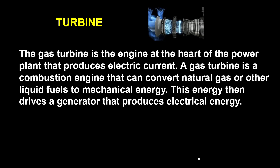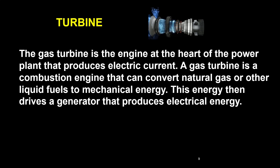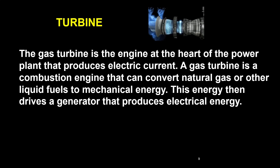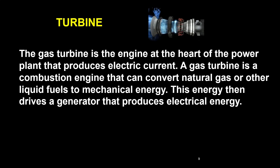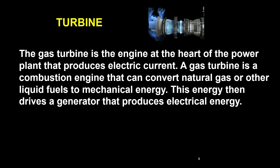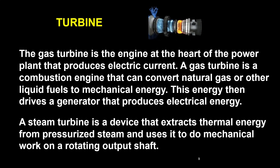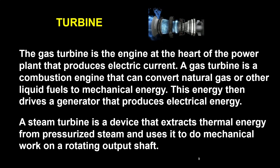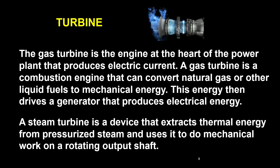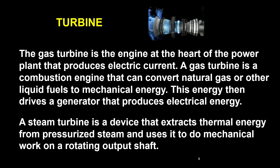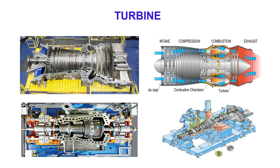Turbine. A gas turbine is an engine that produces electric power. It is a combustion engine that can convert natural gas or other liquid fuels to mechanical energy, which then drives a generator that produces electrical energy. A steam turbine is a device that extracts thermal energy from pressurized steam and uses it to do mechanical work on a rotating output shaft.